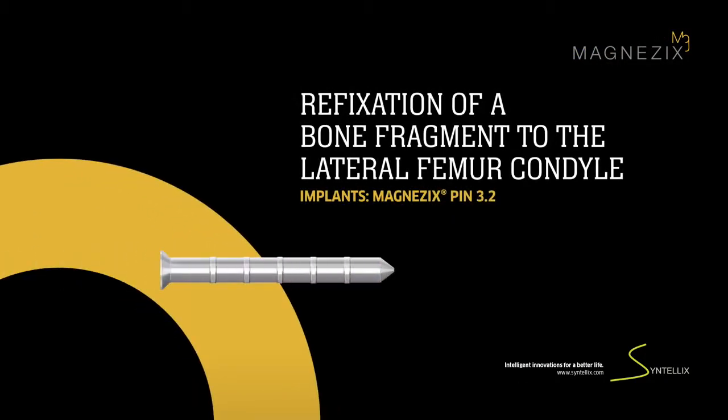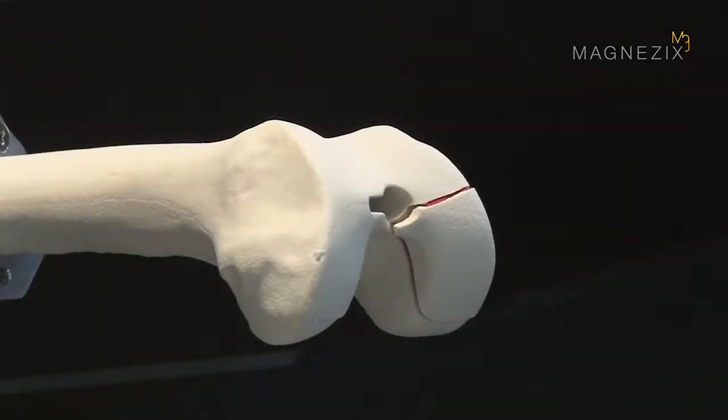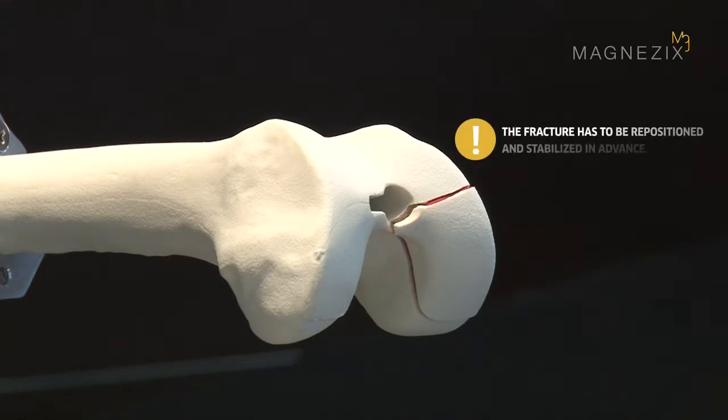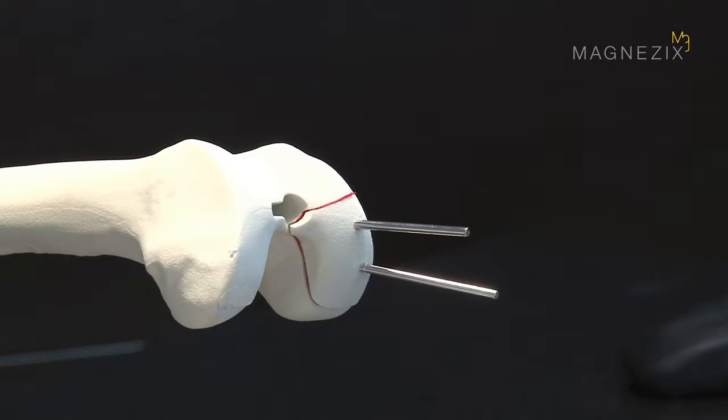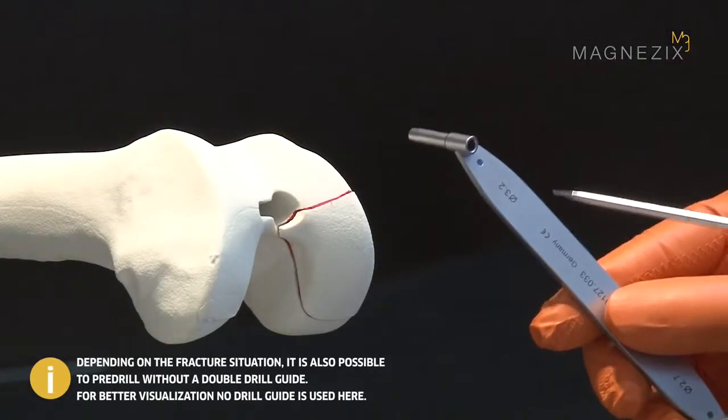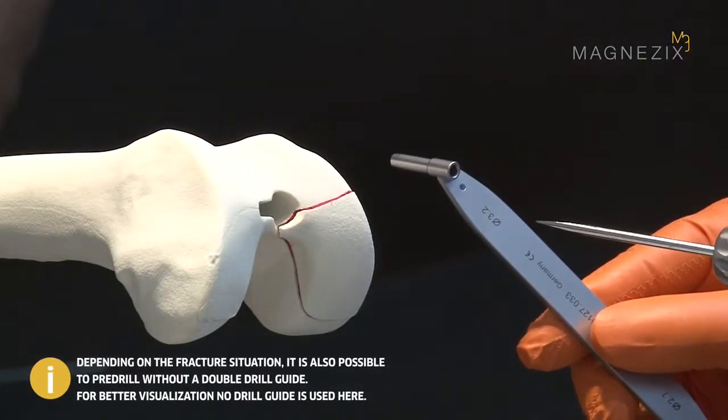This video describes the treatment of an osteochondrosis dissecans to the lateral femur condyle using two Magnesix 3.2 pins. Before the pins can be implanted, the fragment has to be repositioned and temporarily stabilized. Two reduction wires are used for repositioning and pre-drilling the implant bed. The reduction wires are inserted into the bone through the double drill sleeve.